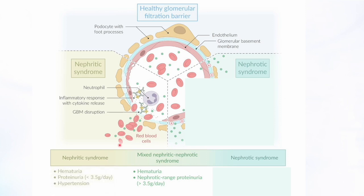When the barrier is damaged in nephritic syndrome, a space is created for red blood cells to escape — that's why you get hematuria. Red blood cells going down the tubules form casts. Because the glomerulus is not filtering properly, you also get salt and water retention with edema and hypertension. This is the triad of nephritic syndrome.